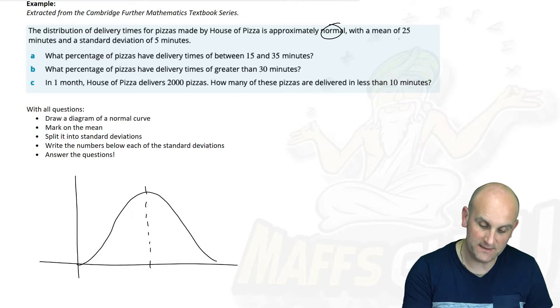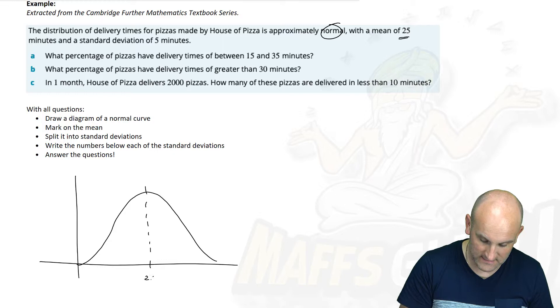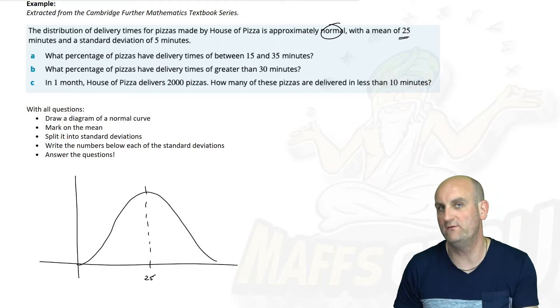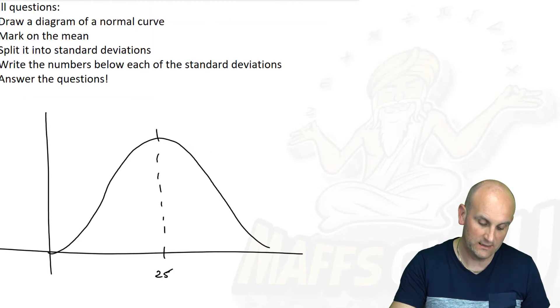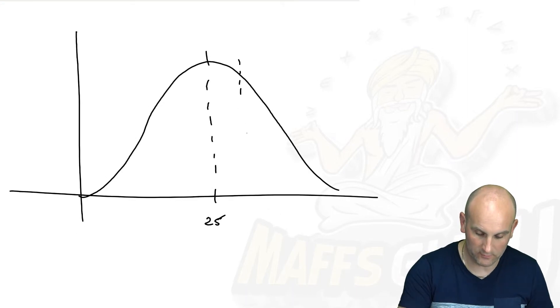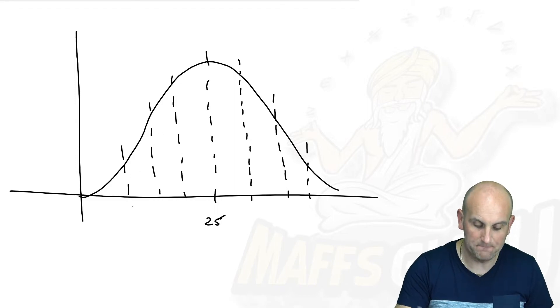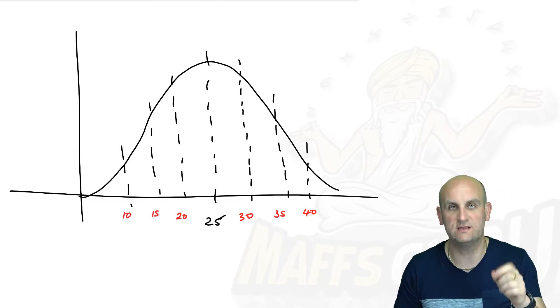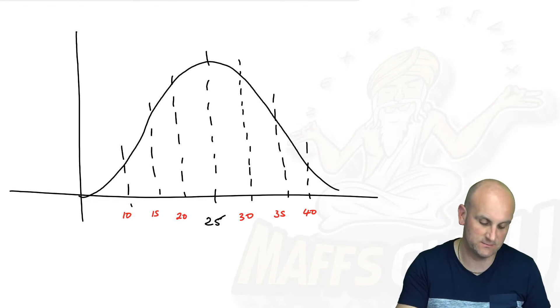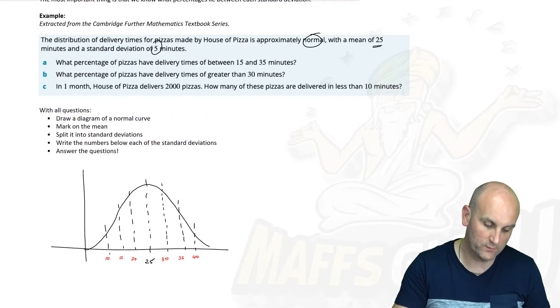It has a mean of 25. That now means that this center value here is 25. And a standard deviation of five minutes. The gap between each of these dotted lines is actually equal to five. Add five on. So this now becomes 30, this becomes 35, and that becomes 40. This becomes 20, 15, and 10. Write those actual numbers on because it's really going to help us solve this question.